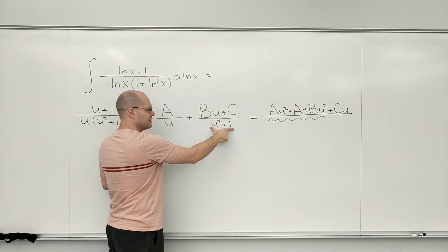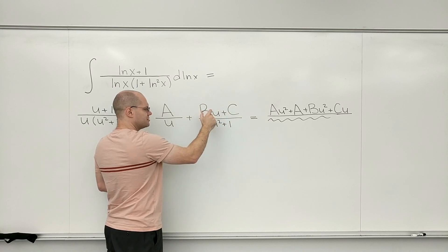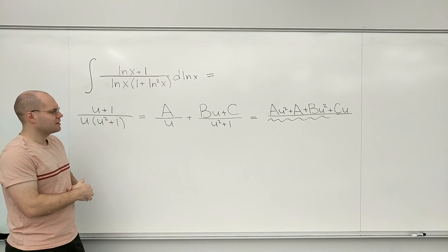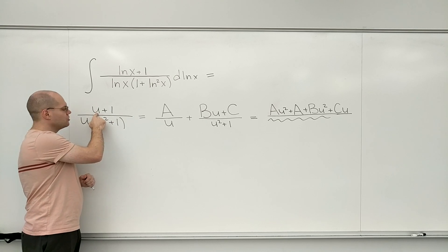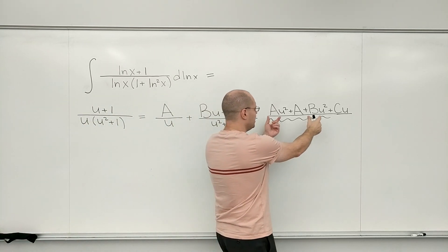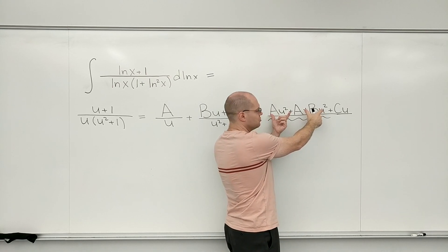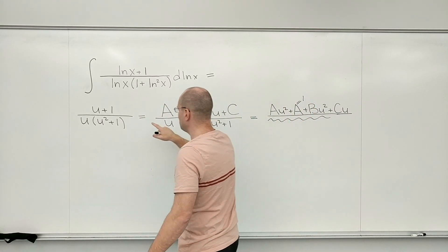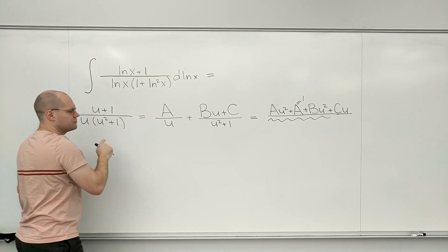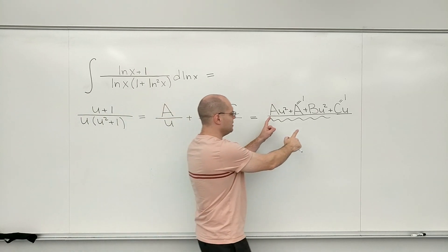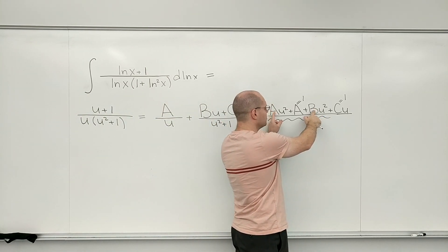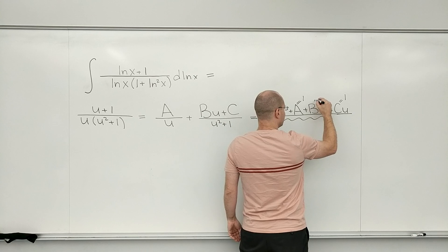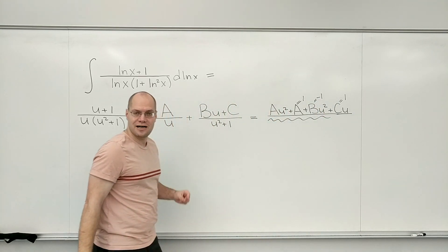So A gets a multiple of u squared plus 1 ends up A u squared plus A. This numerator gets a multiple of u so it becomes B u squared plus C u. So I think I got that right. And we've got to match it up with u plus 1. So I can do it even without collecting the like terms just because it's so simple. So A needs to be 1. C needs to be 1 as well, because that's the coefficient, that's the linear coefficient. And A plus B which multiply u squared must equal 0, because there is no quadratic term here. So if A is 1 then B is minus 1. And we have all our three constants just like that.